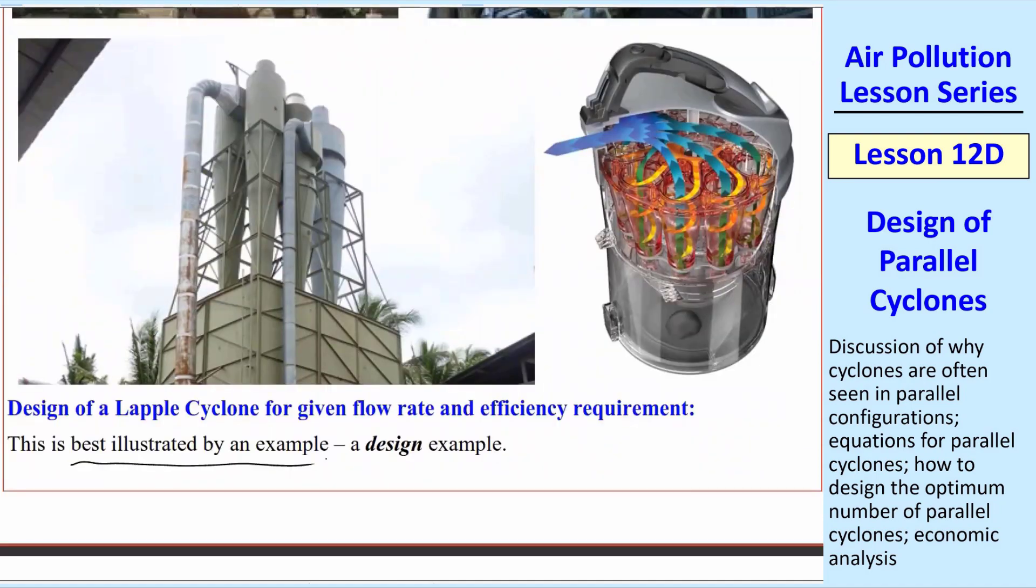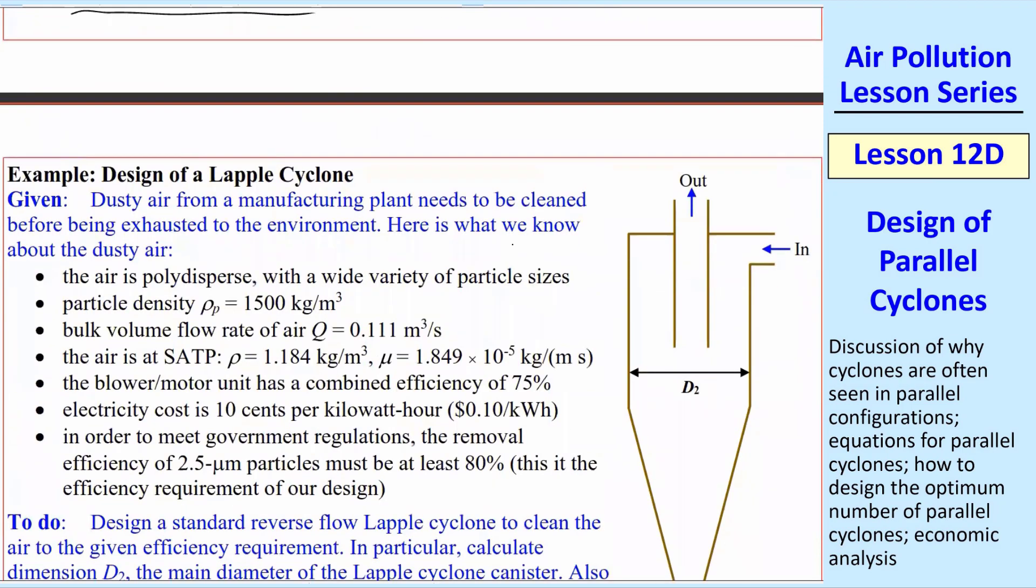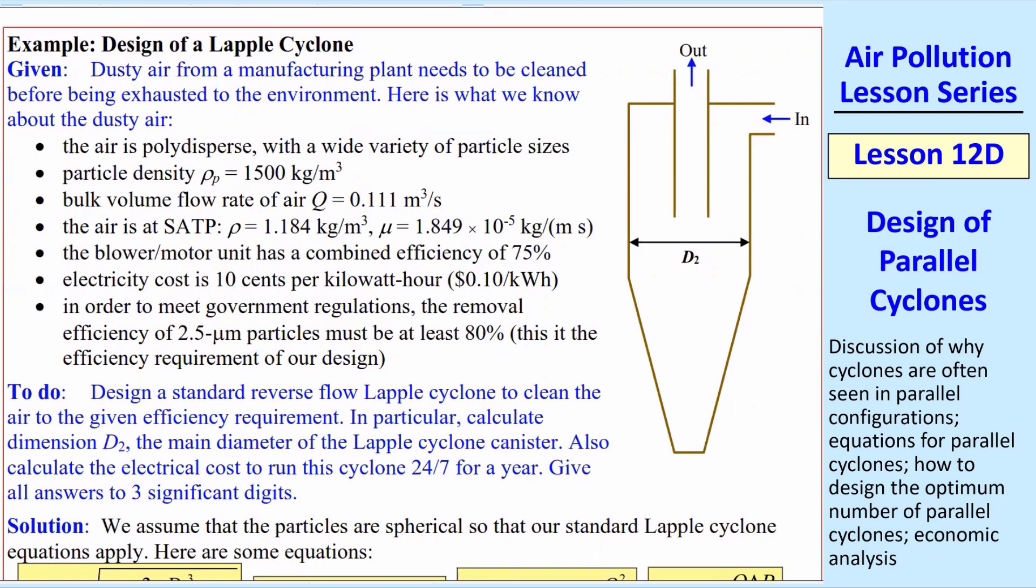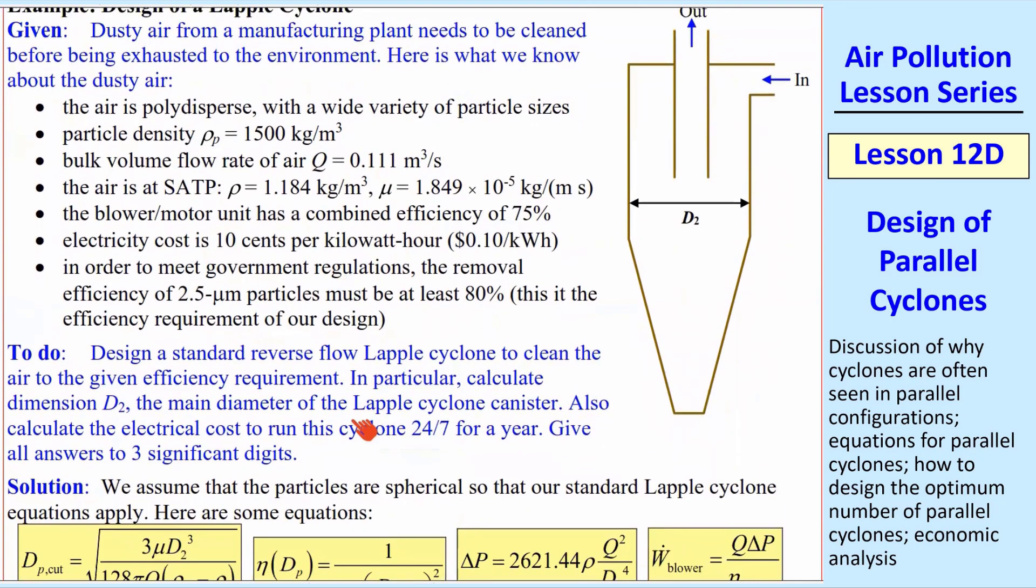It's best illustrated by an example, and this is a design example, so this is a real practical application. I'm going to do one big cyclone first, and then I'm going to compare to a bunch of cyclones in parallel to see why there's an advantage. Let's look at this given information. We're designing a Lapple cyclone. We have dusty air that needs cleaned, polydispersed - that means wide variety of particle sizes. We have a particle density, a flow rate. Let's assume air is at SATP. The blower motor unit has a combined efficiency of 75%. Electricity is 10 cents per kilowatt hour. The regulations that need to be met is we have to remove 2.5 micron particles with at least 80% removal efficiency. That's the design parameter we need to meet.